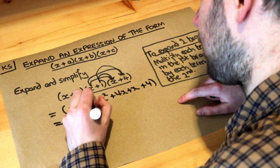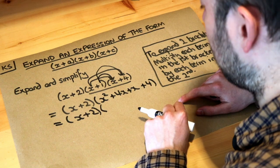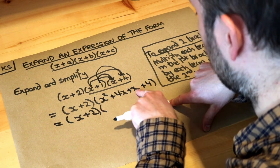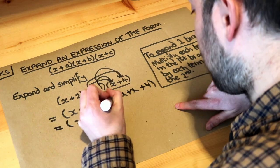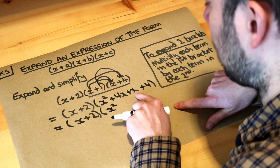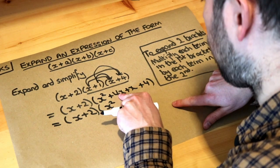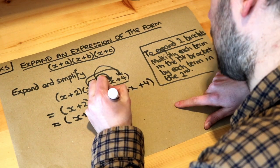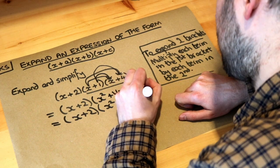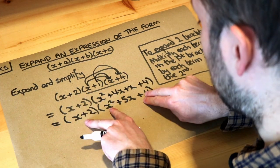Now we tidy up by collecting like terms. They have to have the same powers. x squared doesn't collect with anything, but 4x plus x are like terms — four lots of x plus one lot of x is five lots of x — and we still have plus 4. So we get x² + 5x + 4.